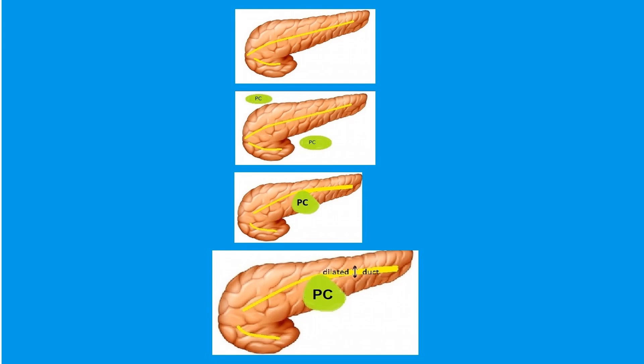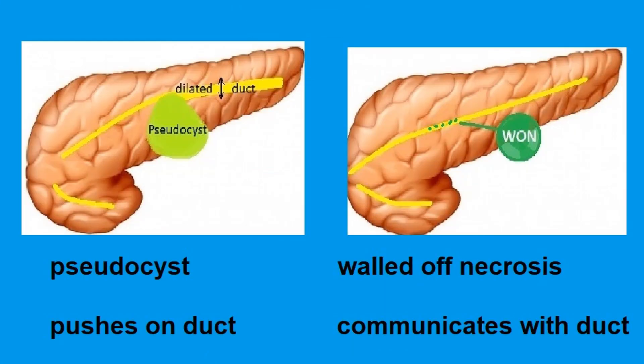A diagram reinforces that pseudocysts are extrinsic to the pancreas. They may push on the pancreas and produce upstream ductal dilatation. In contrast, the walled-off mature necrotic collection is often intraparenchymal or extraparenchymal, but frequently communicates with the duct. Because it's not pressing on the duct to the degree a pseudocyst does, we don't usually see upstream ductal dilatation — though there are exceptions; these are just general guidelines.